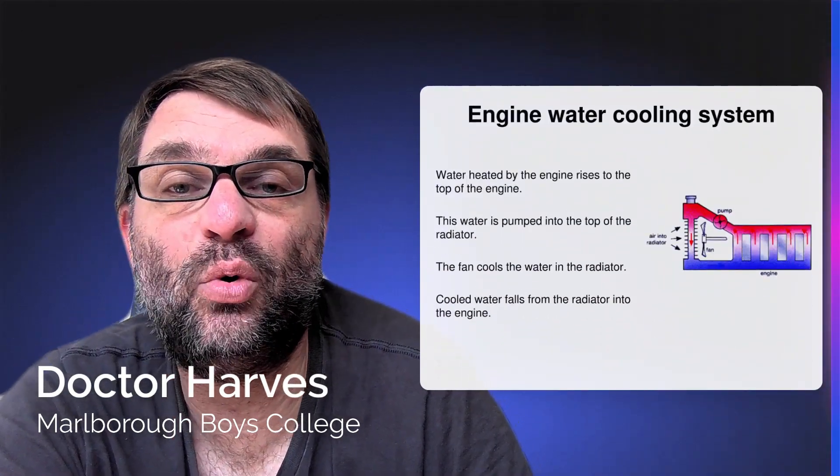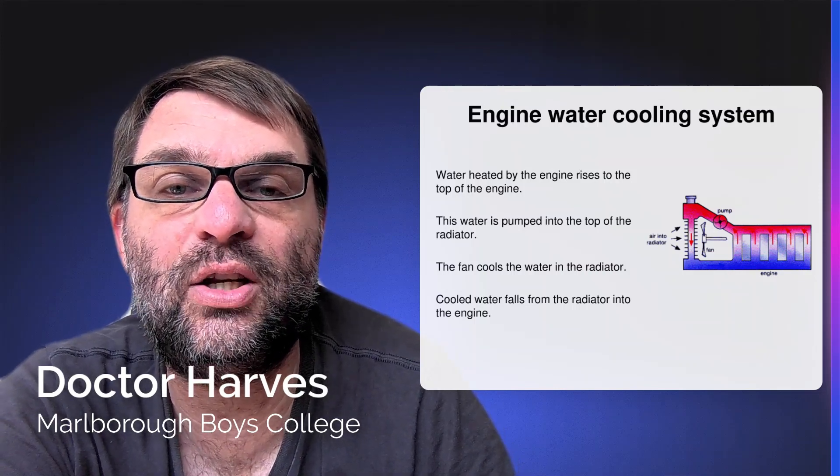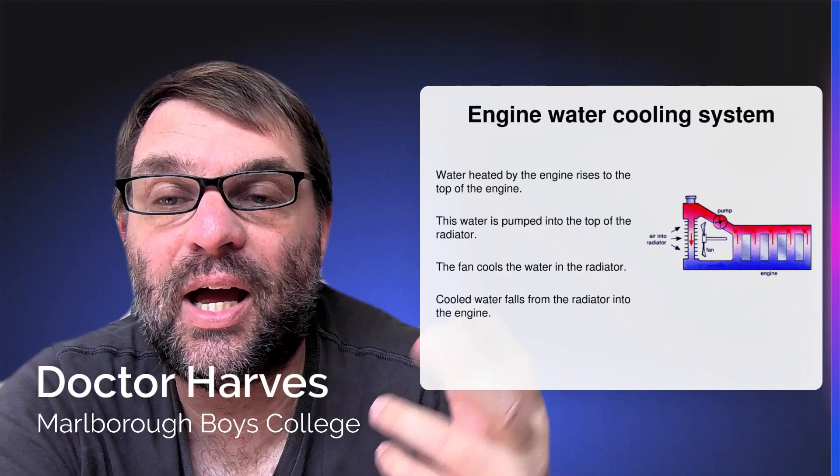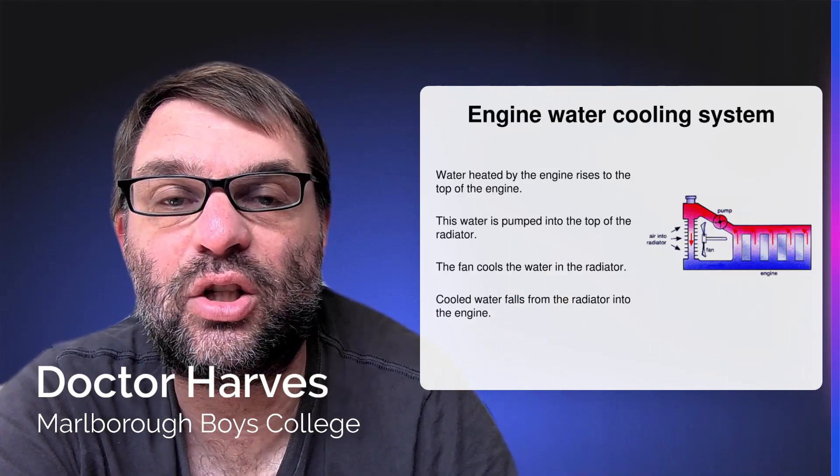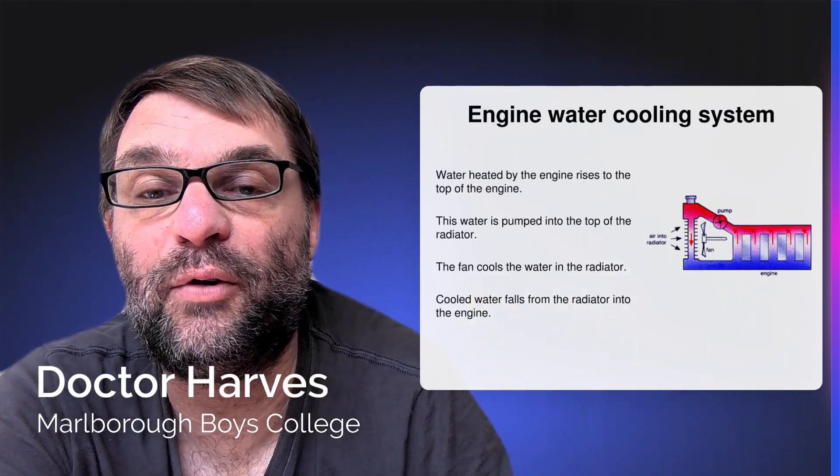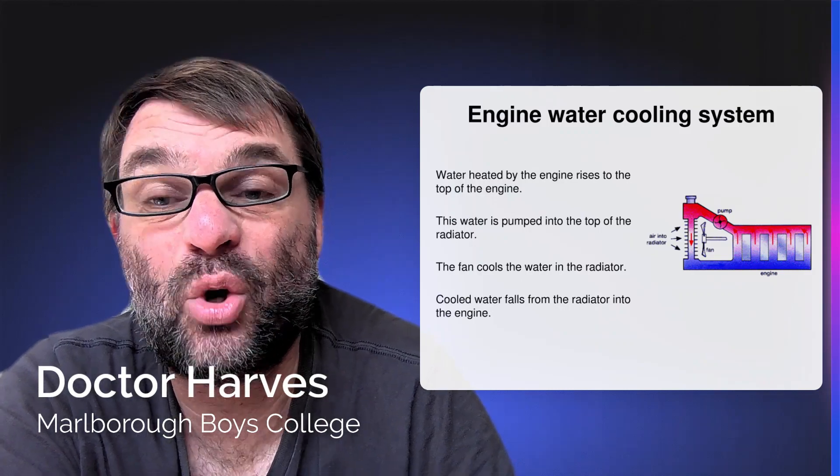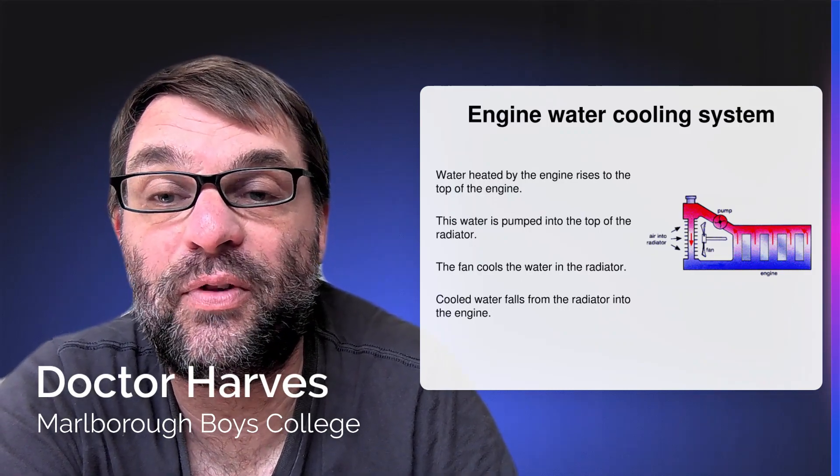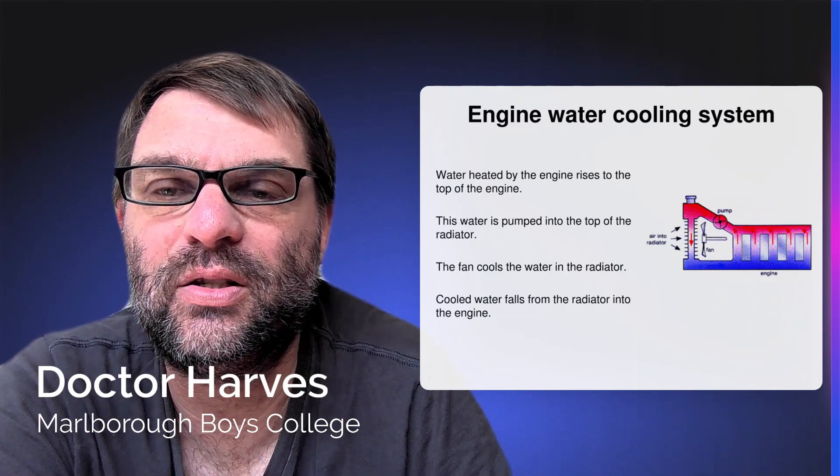For more practical applications you've also got engines. That's how a water cooling system works in an engine. Basically as the engine runs it heats the cold water, which then rises to the top of the engine. This hot water is then pumped to the top of the radiator, which gets cooled down by the fan in the front of the car. That cools down the water and it drops to the bottom of the engine again and the cycle begins again. There's a theme - it's all about cycles.